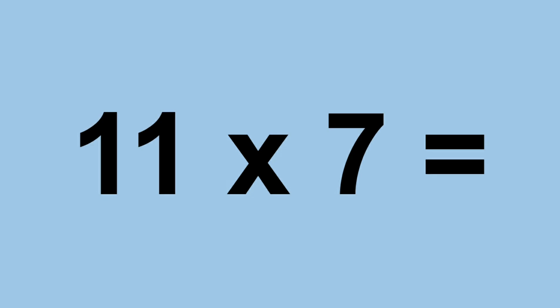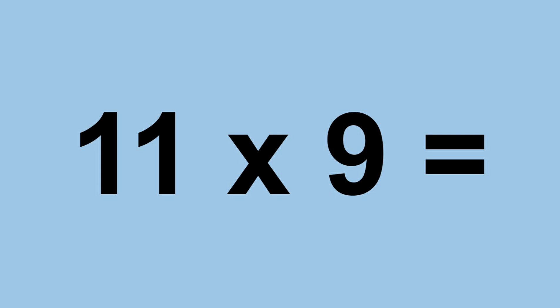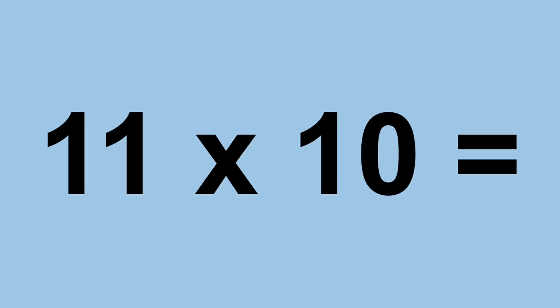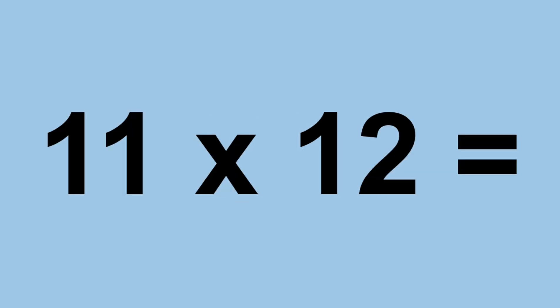Eleven times seven equals seventy-seven. Eleven times eight equals eighty-eight. Eleven times nine equals ninety-nine. Eleven times ten equals one hundred and ten. Eleven times eleven equals one hundred and twenty-one. Eleven times twelve equals one hundred and thirty-two.